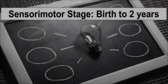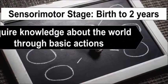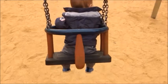The sensorimotor stage. The first stage of cognitive development ranges from birth to two years of age. Infants do not yet have a mental picture of the world and still do not have a sense of object permanence. During this stage, toddlers acquire knowledge about the world through basic actions such as sucking, grasping, looking, and listening.